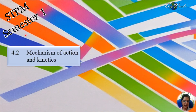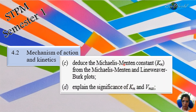Now the SDPM semester one syllabus for chapter four, subtopic 4.2, concerning the mechanism of action and kinetics, requires us to be able to deduce the Michaelis-Menten constant called Km from the Michaelis-Menten curve as well as the Lineweaver-Burk plot. After which, we must know the importance and significance of the Km and Vm values.